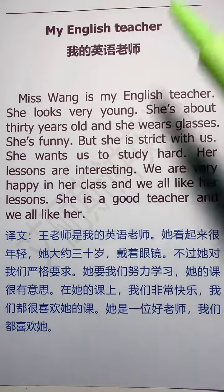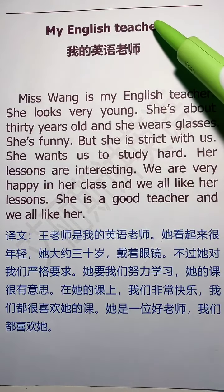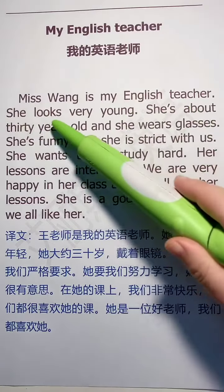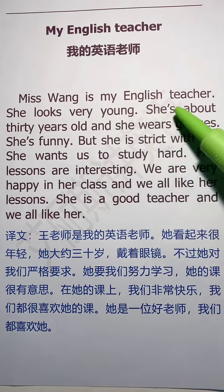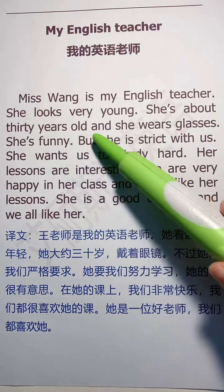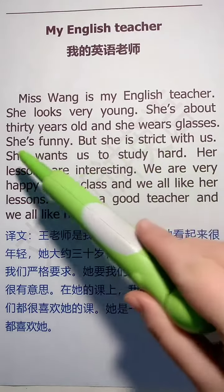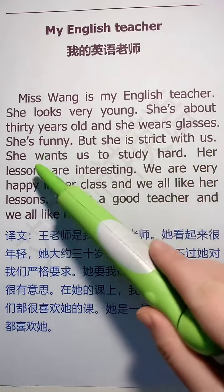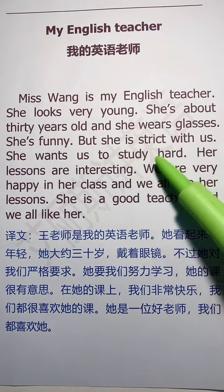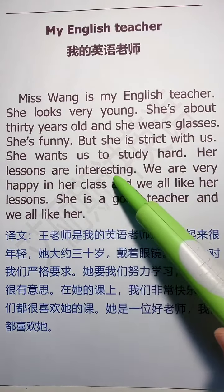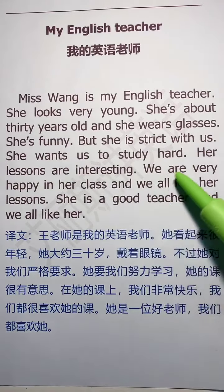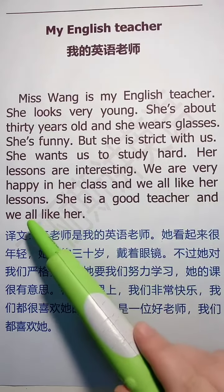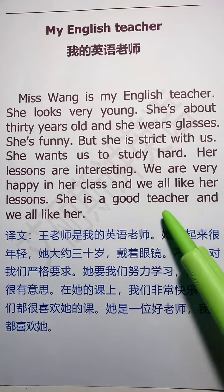My English Teacher. Miss Wang is my English teacher. She looks very young. She's about 30 years old. And she wears glasses. She's funny, but she is strict with us. She wants us to study hard. Her lessons are interesting. We are very happy in her class. And we all like her lessons. She is a good teacher. And we all like her.